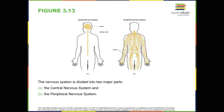Section 3.3: Parts of the Nervous System. Learning objectives: by the end of this section you'll be able to one, describe the difference between the central and peripheral nervous systems; two, explain the difference between the somatic and autonomic nervous systems.